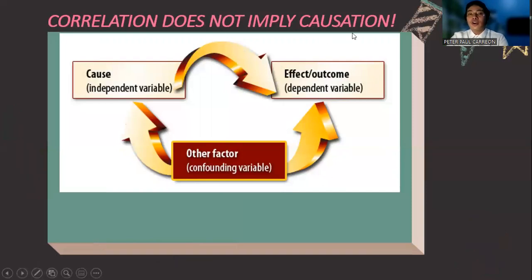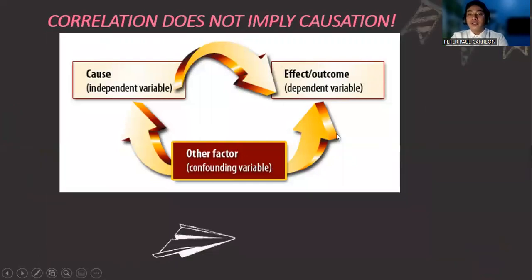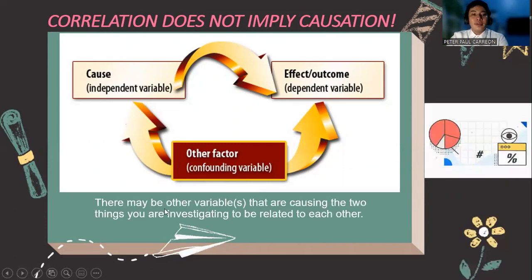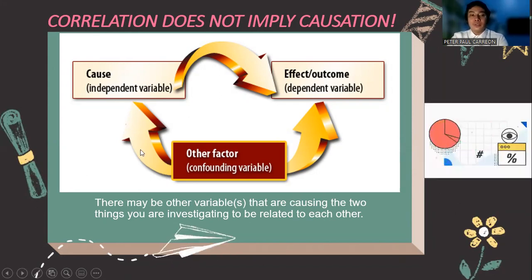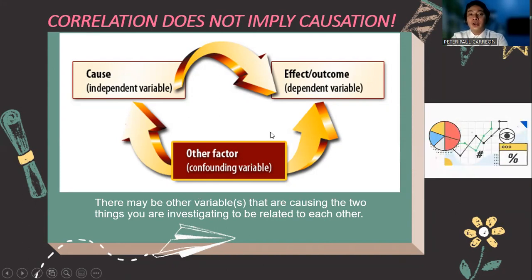Because if it is a cause and effect problem, then that is not correlation. But correlation shows how the two variables exist with each other. They are just confounding variables. There may be other variables that can cause two things you are investigating to be related to each other. It's not only about the average grade of a person, but IQ could be correlated with other existing variables.